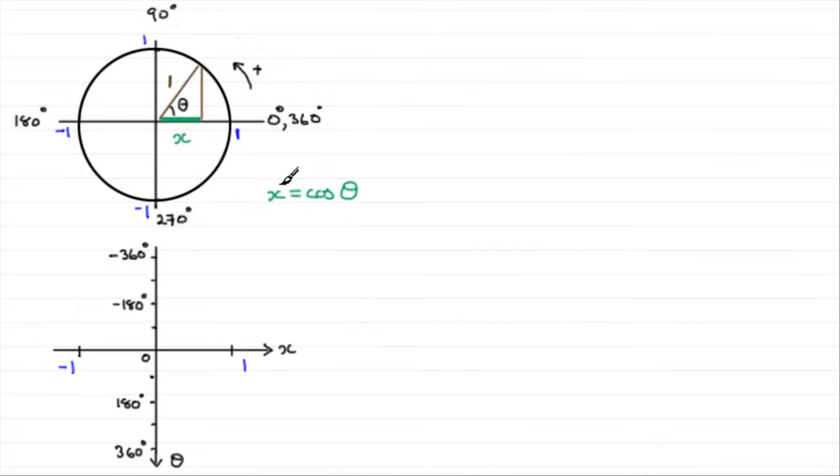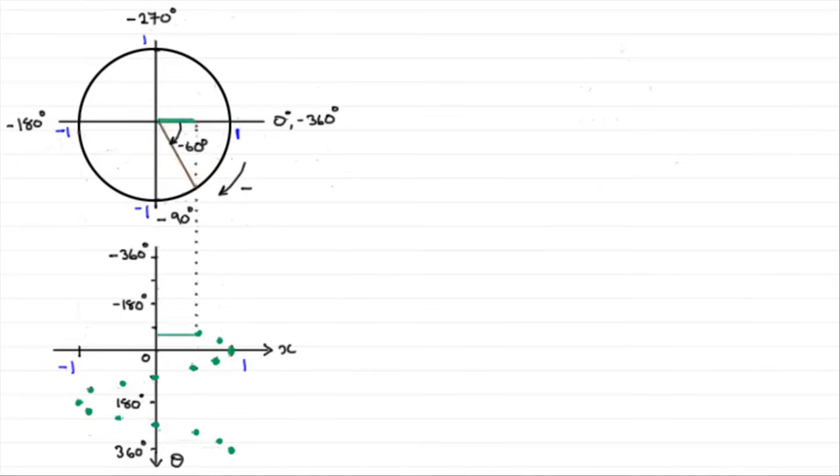We can think of sketching the graph of x equals cos theta as we move round the circle. As we go from 0 to 360 degrees, we're going to get something like this. Now as we go from 0 to minus 360 in the other direction, we eventually end up with the final graph going from minus 360 to 360, which when joined up gives us the graph of x equals cos theta.